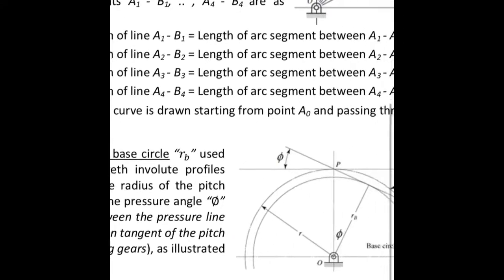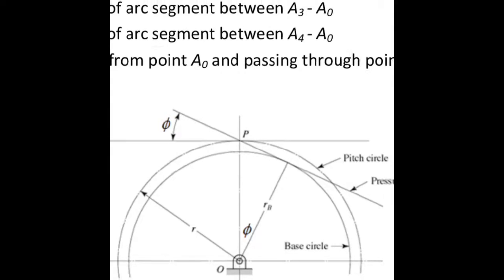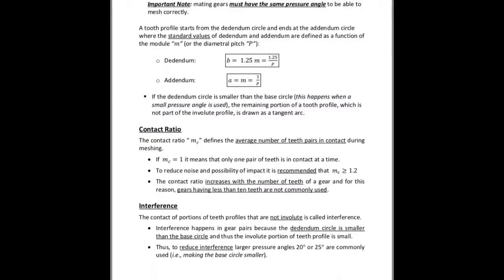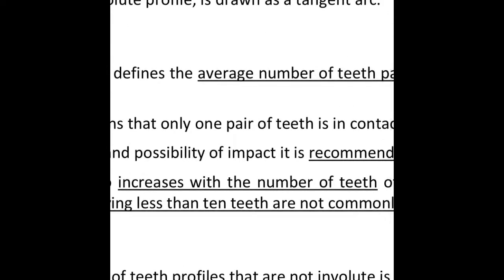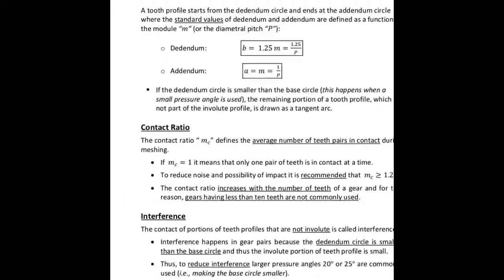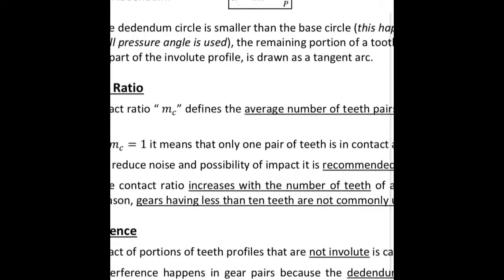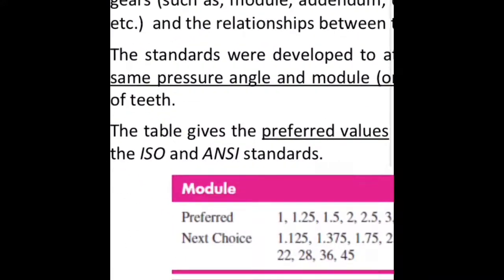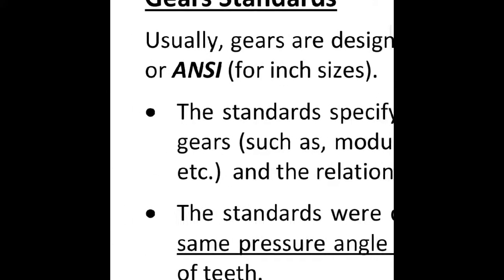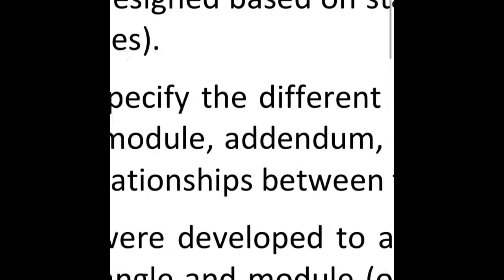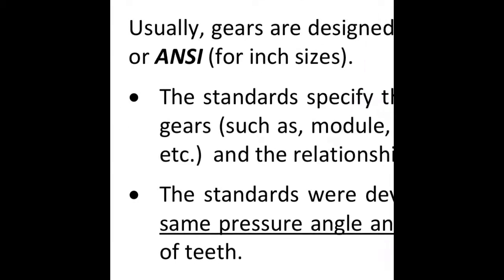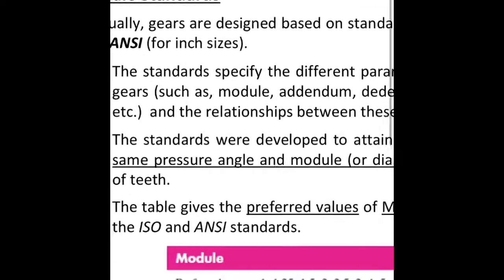Gear Standards: gears are designed based on standards established by ISO for metric sizes or ANSI for inch sizes. The standards specify the different parameters used to define the geometry of gears, such as module, addendum, dedendum, tooth thickness, pressure angle, etc., and the relationships between these parameters. The standards were developed to attain interchangeability of gears having the same pressure angle and module or diametral pitch. The table gives the preferred values of module and diametral pitch according to ISO and ANSI standards. Gear manufacturers make a large variety of standard size gears available as off-the-shelf components.